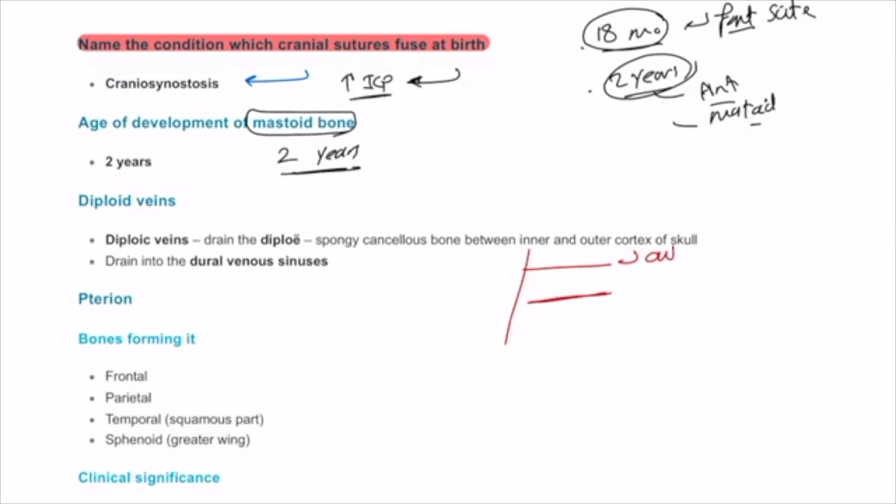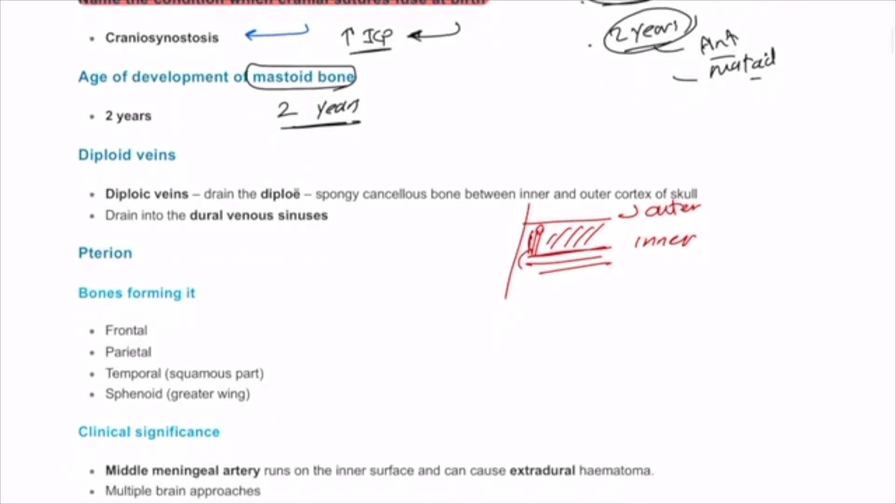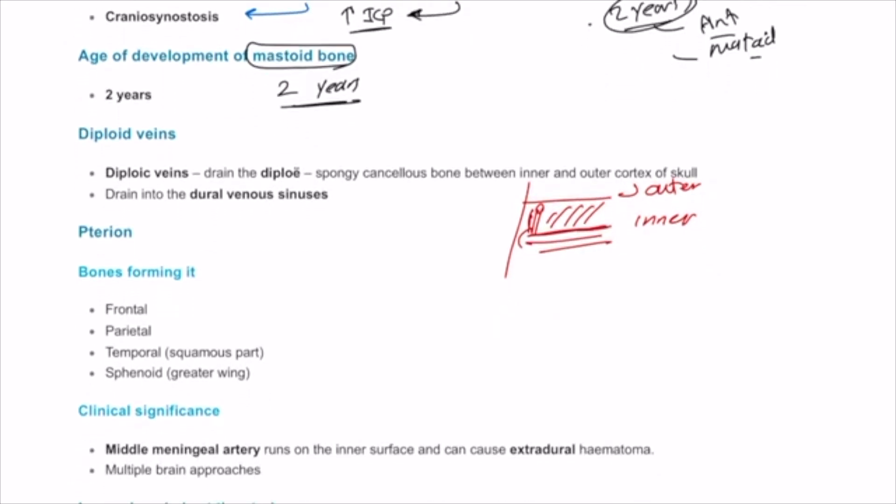So the bone between it will have lots of diploic veins that are being drained into the superior sagittal sinus which is literally just below the inner table of the skull.